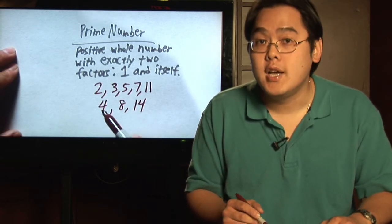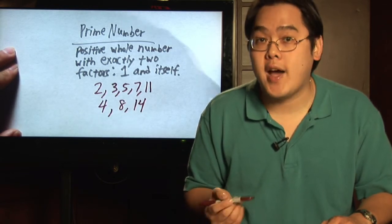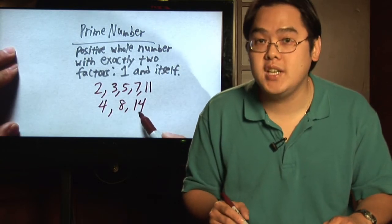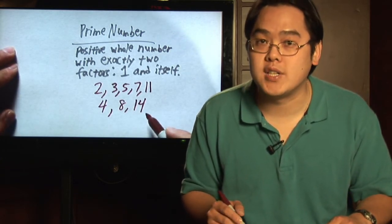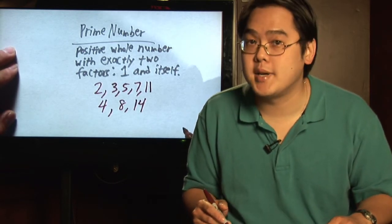For example, with four, two goes into four, so four is not a prime number. With eight, factors of eight are one and eight, but also two and four. And with fourteen, two and seven go into fourteen. These are examples of what are called composite numbers.